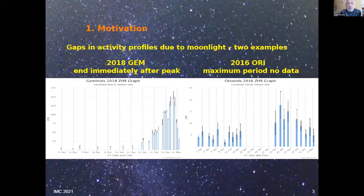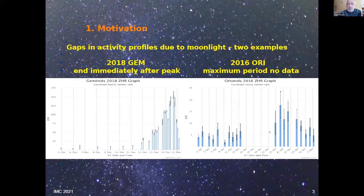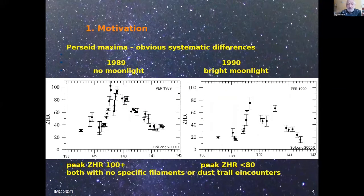If you look at EMO graphs — the live graphs — you often find things like here with the Geminids in 2018: you have just covered the maximum and something more, and then nothing else is available. Or with the Orionids 2016, you have this nice rising branch and then there's the full moon gap — nothing happens — and then you have some scattered values until it goes back. That's very frustrating because you don't know about important parts of the shower activity.